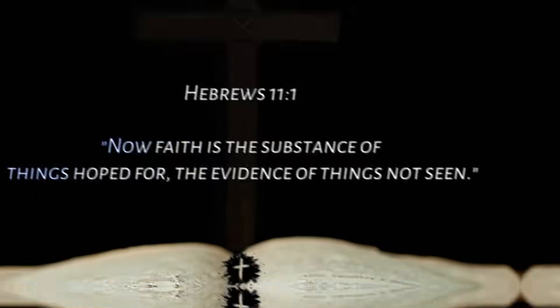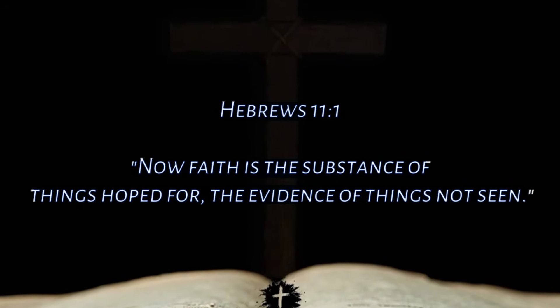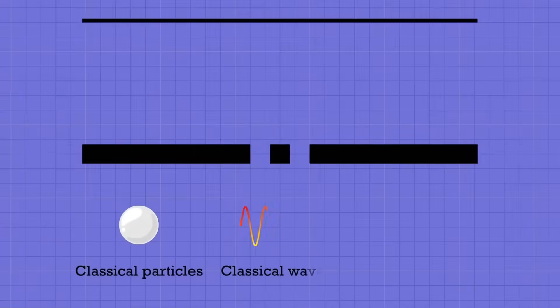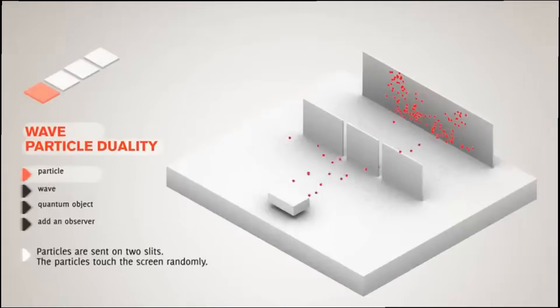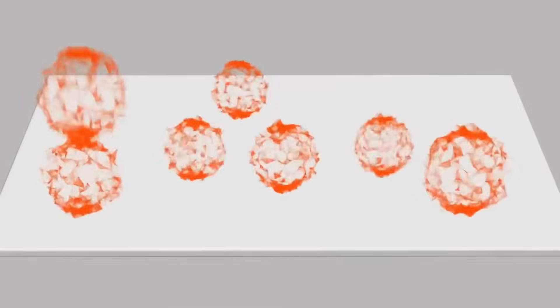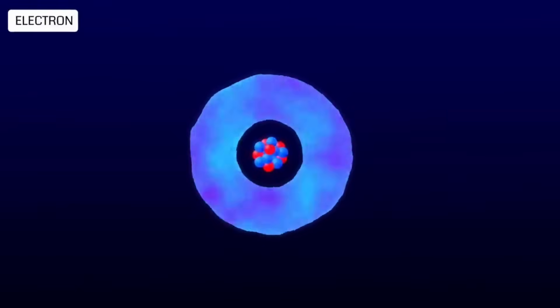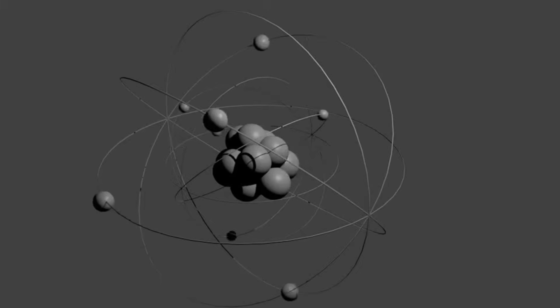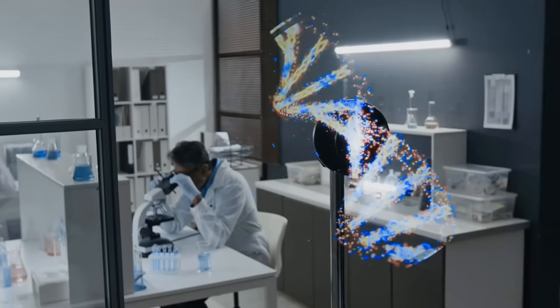Romans 1:20 adds, his invisible qualities have been clearly seen, being understood from what has been made. Here, the seen world reveals the unseen. That principle underpins physics. We infer subatomic behavior from experiments, building models that explain phenomena far beyond direct perception. Then comes Jeremiah 23:24—Do I not fill heaven and earth? That's omnipresence. God's presence permeates all. In quantum mechanics, non-locality allows entangled particles to share states instantly across any distance. Change one here, and its partner responds there. No signal, no delay. Space, in that sense, is an illusion.